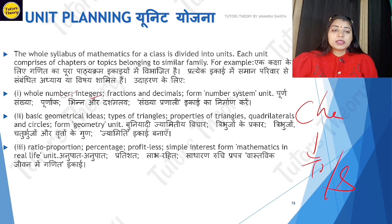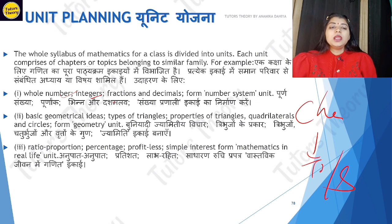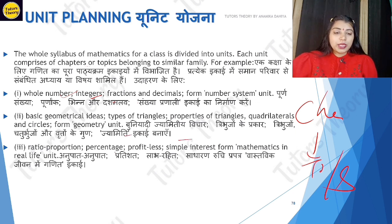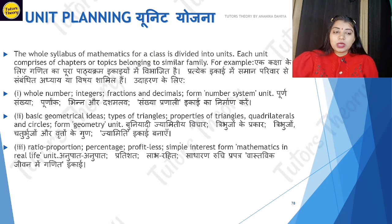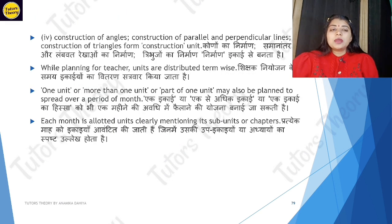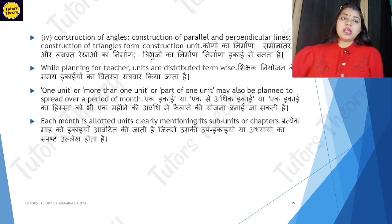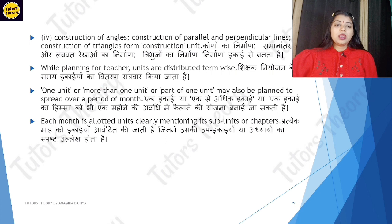For example, Whole Numbers is one unit, inside which come Integers, Fractions, Decimals — all of these come under the Number System unit. In Geometry, Triangles, Properties, Quadrilateral, Circle — the whole Geometry part comes in. For Proportion, Percentage, Profit, Simple Interest form another unit — the Ratio and Proportion unit. Construction of Angles includes how to construct parallel lines, perpendicular lines, and how to construct a triangle. While planning for the teacher, units are distributed term-wise.